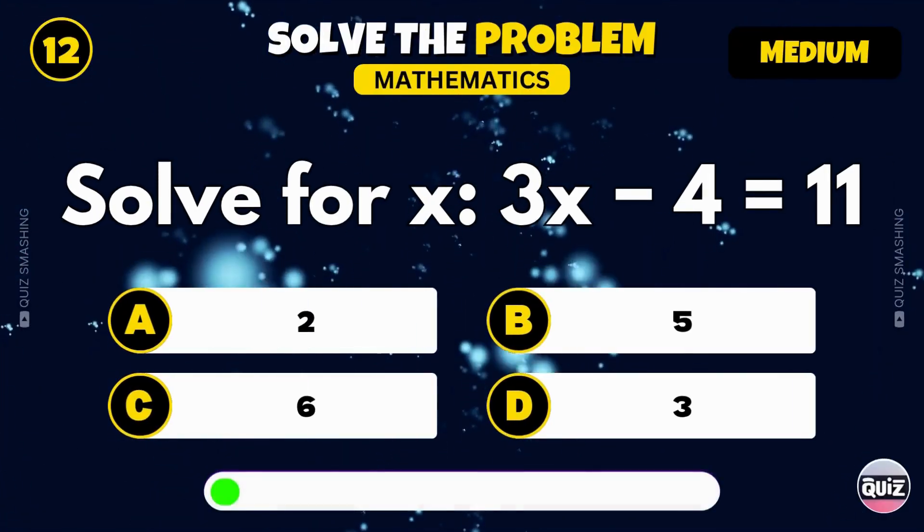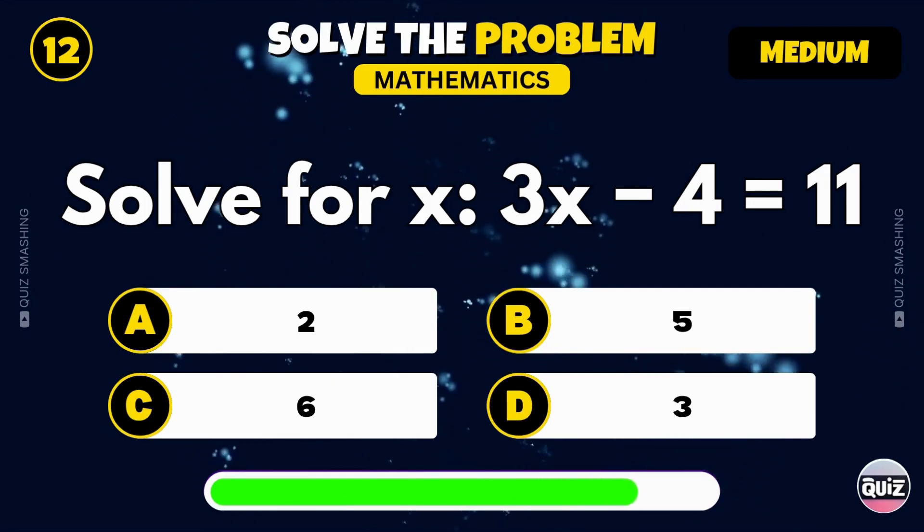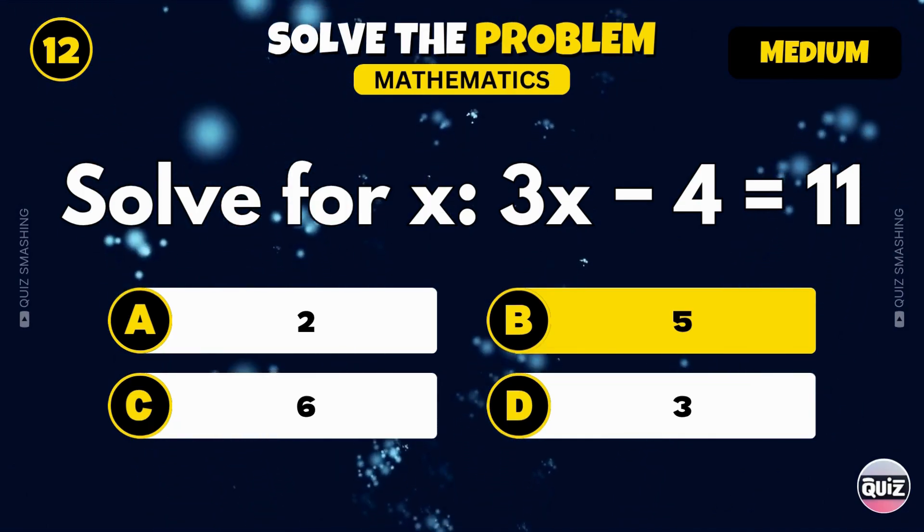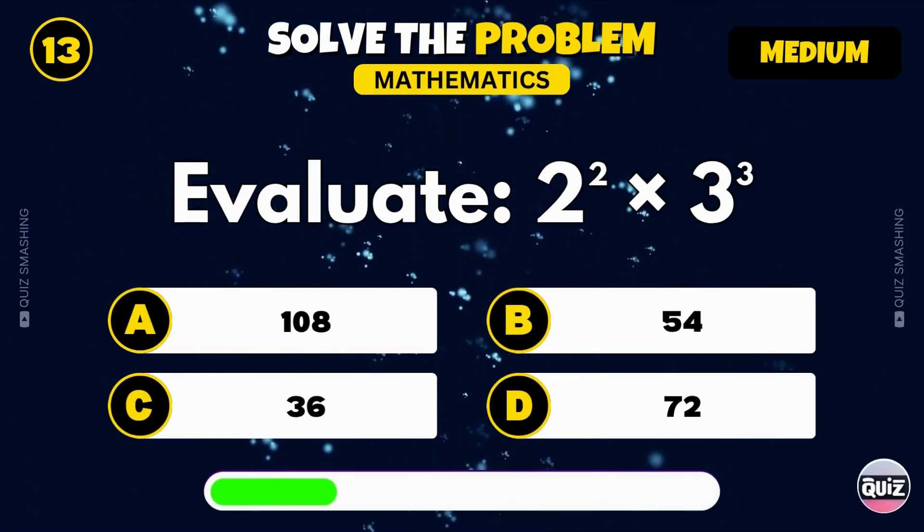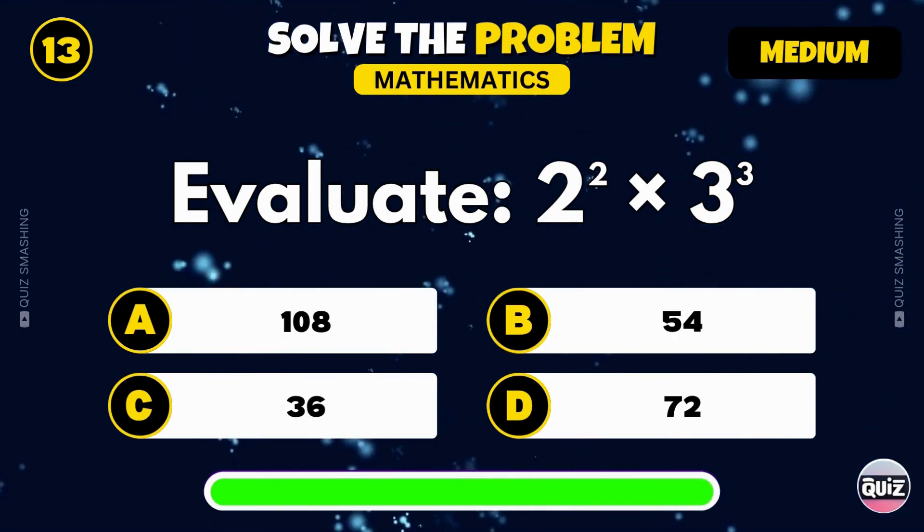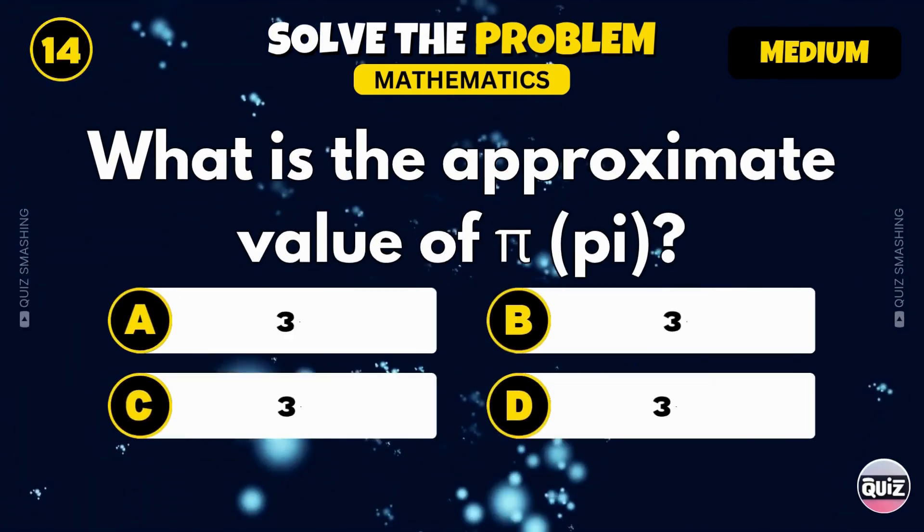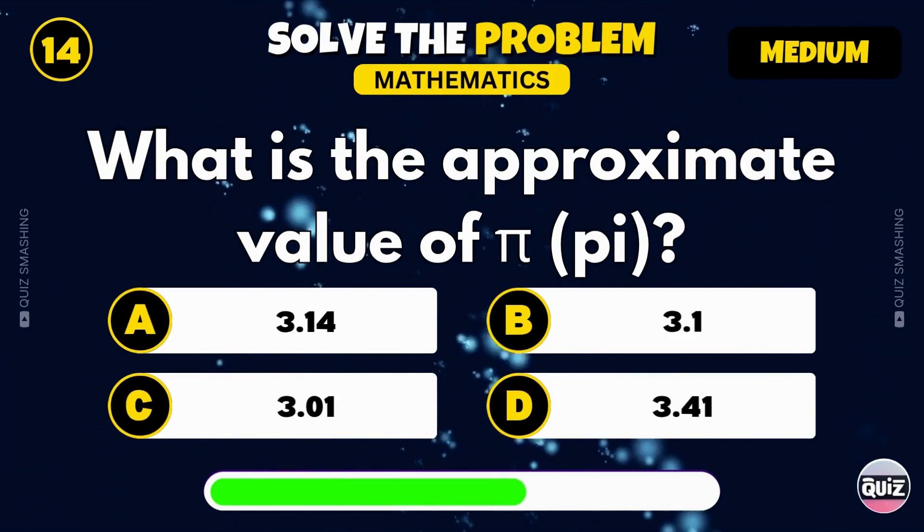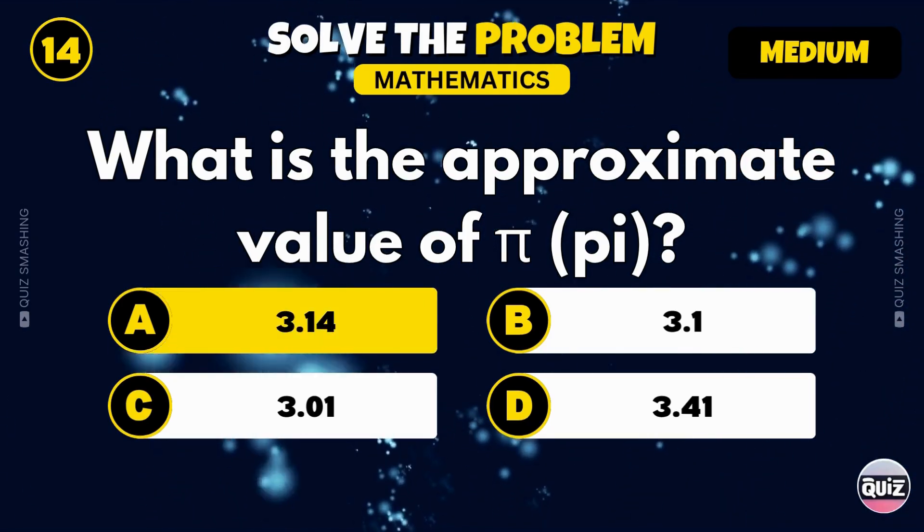Solve for x: 3x minus 4 equals 11. That's right, x equals 5. Evaluate 2 squared multiplied by 3 cubed. You nailed it, the answer is 108. What is the approximate value of pi? Correct, about 3.14.